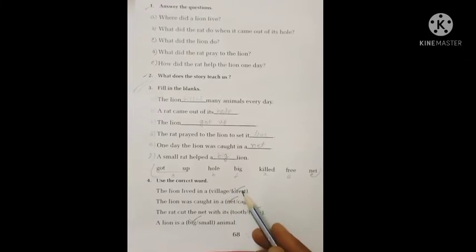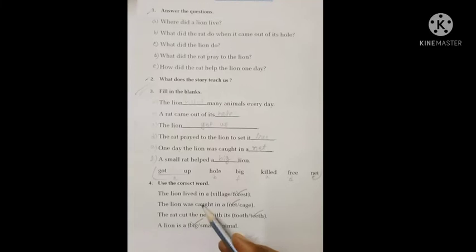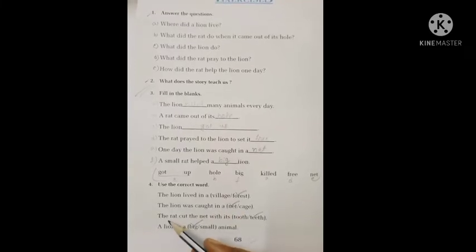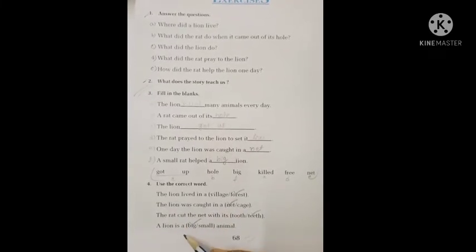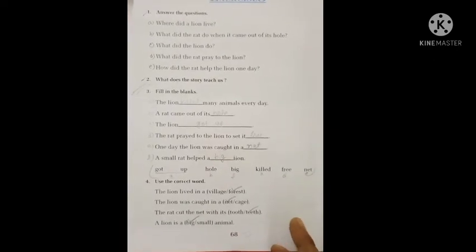The lion lived in a forest. The lion was caught in a net. The rat cut the net with its teeth. A lion is a big animal. So students, look, I have written the answers here.